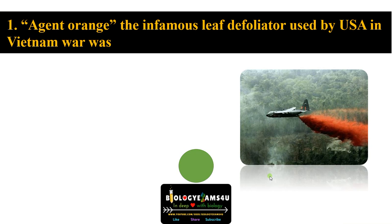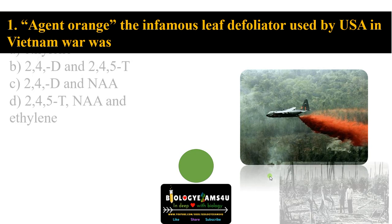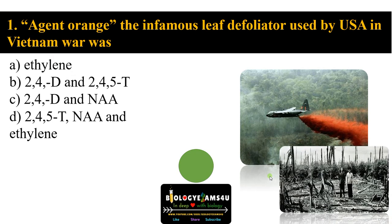Agent Orange, the infamous leaf defoliator used by the US military in the Vietnam War, was: option A ethylene, option B 2,4-D and 2,4,5-T, option C 2,4-D and naphthalene acetic acid (NAA), option D 2,4,5-T, NAA, and ethylene. You have five seconds to make a guess.